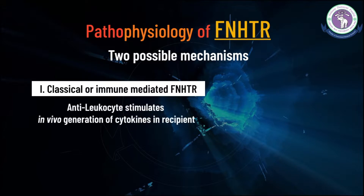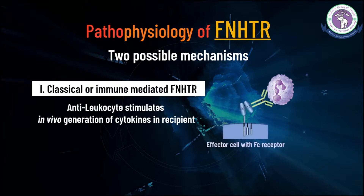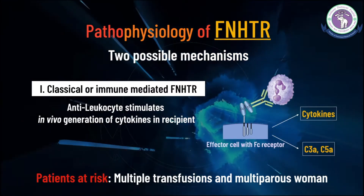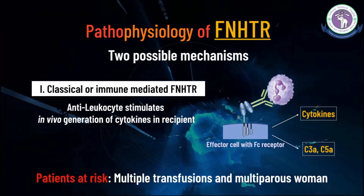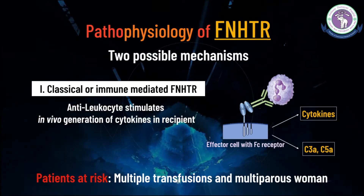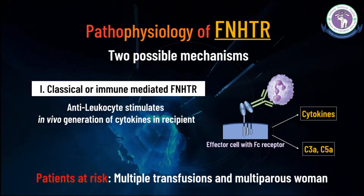Patients' anti-leukocyte antibody, which is mainly anti-HLA, may cause febrile transfusion reaction. The antibody reacts to donor leukocytes, granulocytes, or platelets and induces a cascade of inflammatory cytokines and other mediator release. Patients at risk for classical immune-mediated FNHTR include those with a history of multiple transfusions, such as thalassemia patients, and multiparous women.